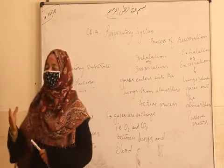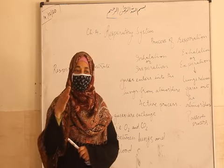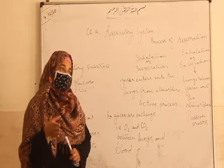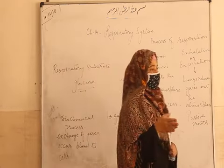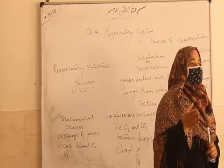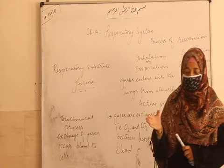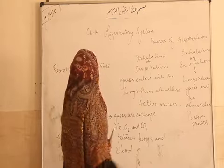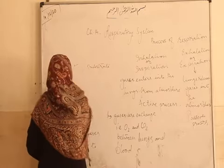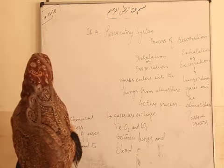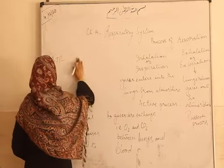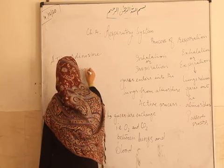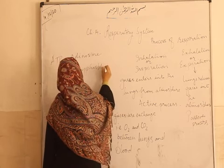Cellular respiration means when glucose is oxidized, or when glucose burns in the presence of oxygen, energy is released. That energy is in the form of a chemical known as ATP — adenosine triphosphate. Energy is released in the form of ATP, that is adenosine triphosphate.